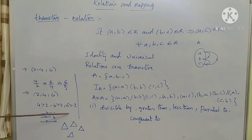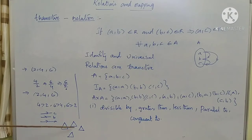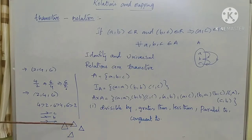For congruent triangles: consider all congruent triangles in a plane. If this triangle is congruent to a second one, and the second is congruent to a third, then both the first and third are congruent to each other. This is one of the examples of a transitive relation.